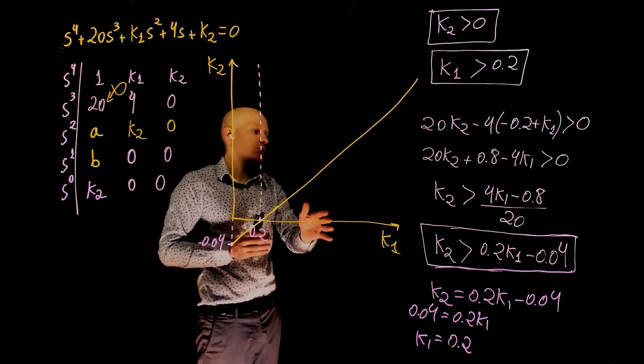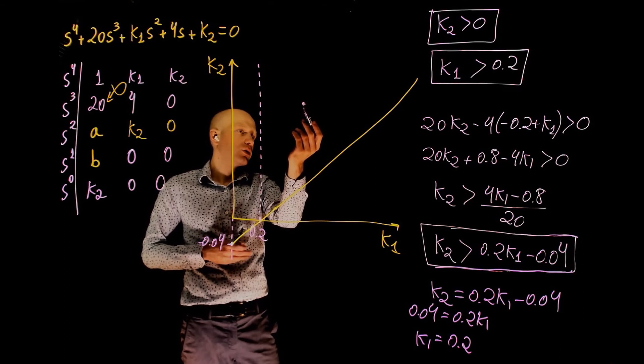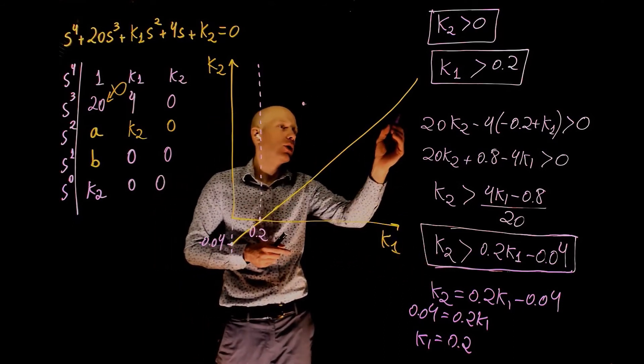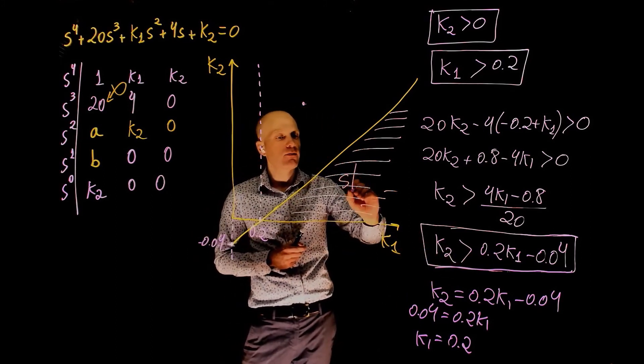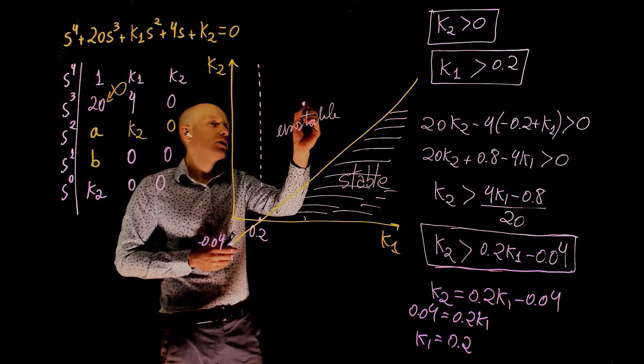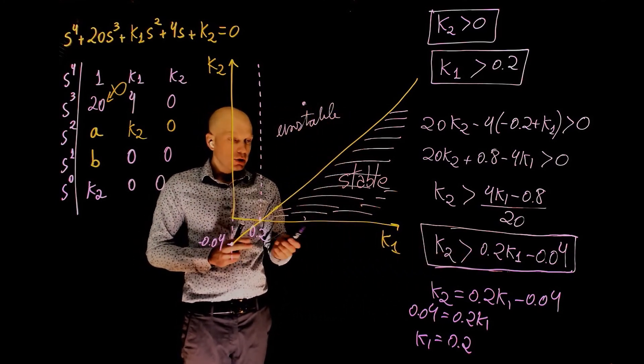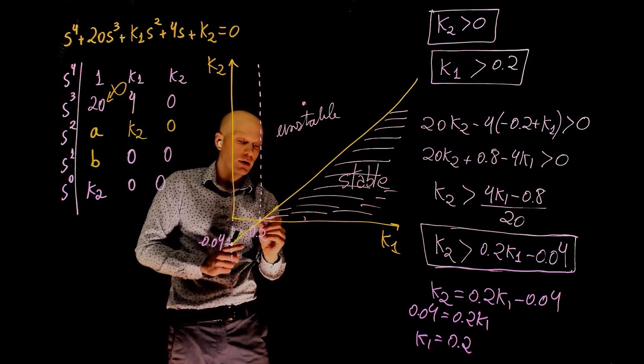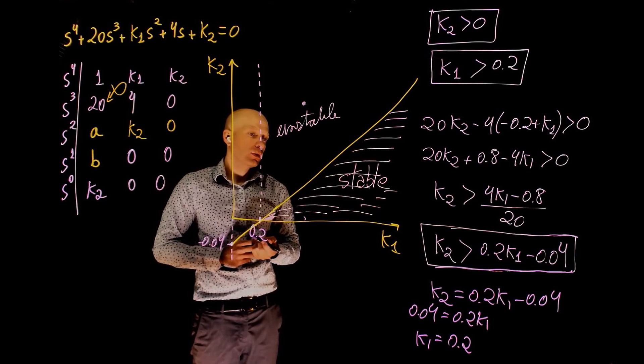Now, we can pick points on this plane on any side of this curve and see if this condition is respected. We can pick a point here, give a random value for k2 and k1, and see if the point that is on this side of the curve respects this condition. You'll see that any point on this region here will not satisfy this condition, and any point on this side of the curve will satisfy this condition. So, this is the stable region, and this is the unstable region. The other conditions are k1 greater than 0.2 and k2 greater than 0. If you pick any point in this region, the system is closed-loop stable.